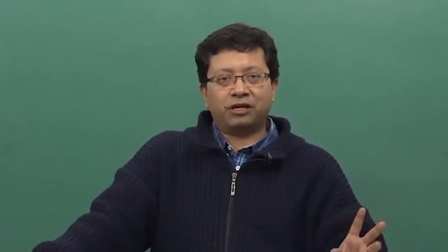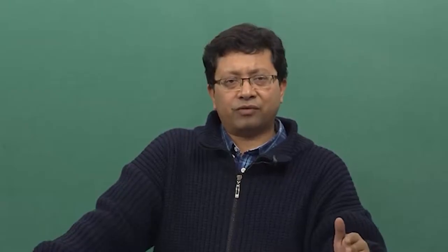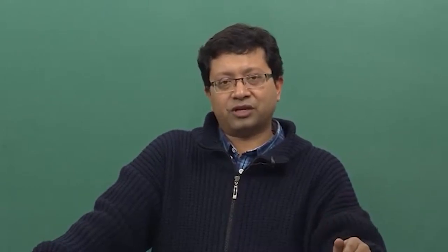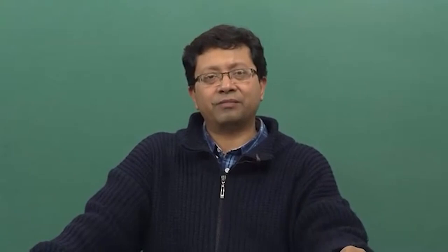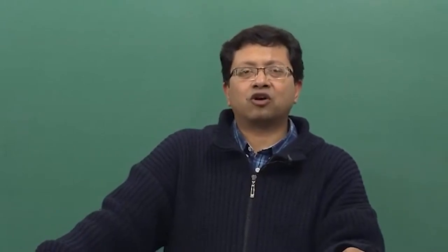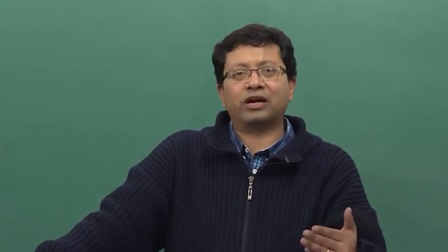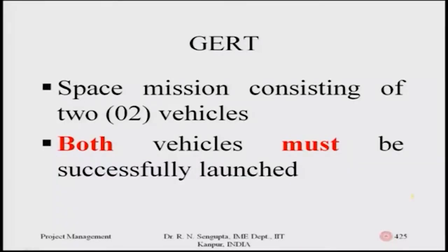Now let us consider a very simple example in two different flavors. These problems are taken from the Pritzker GERT book, which I did mention in the reference list — you can find it online or in a nearby library. The first example: a space mission consists of two vehicles. The important point is that both vehicles must be successfully launched in order to have success in the overall project. Based on this statement, let me draw the diagram.